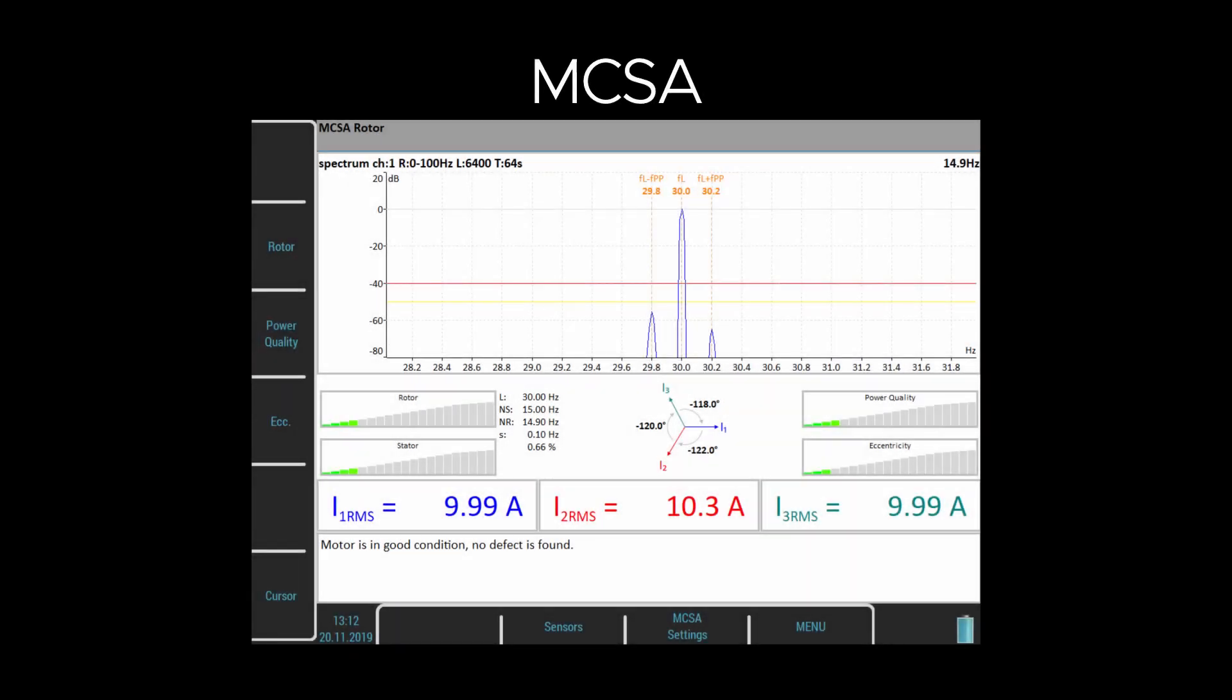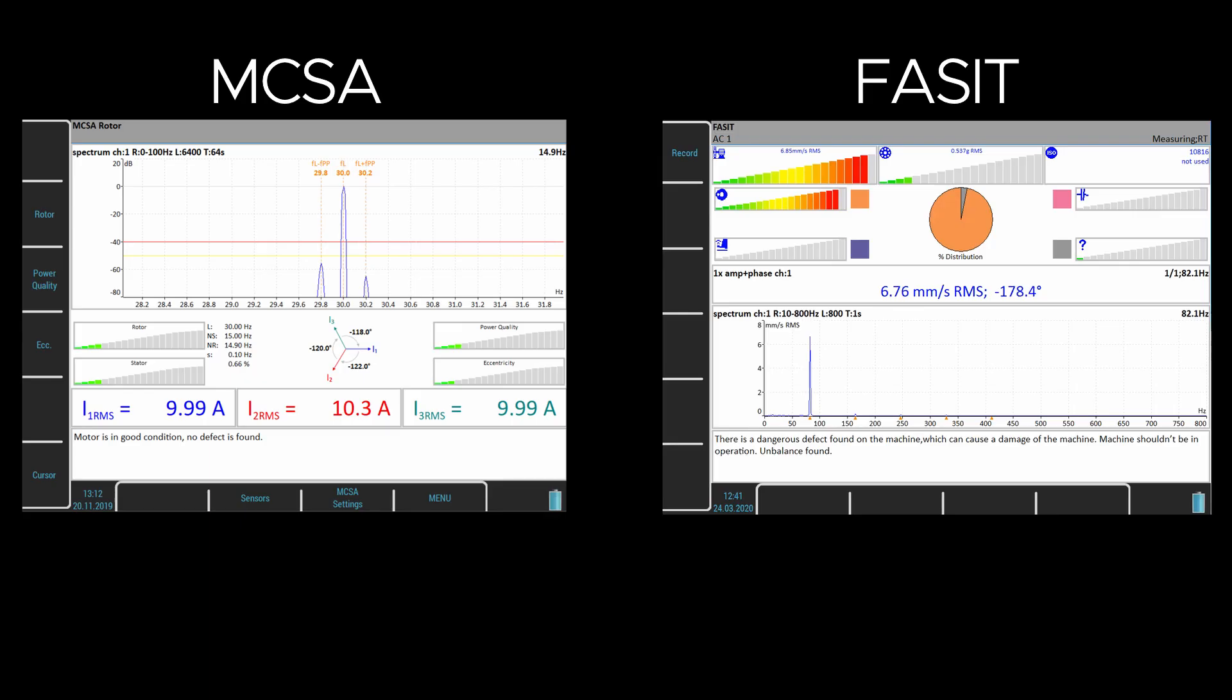Or you can use the automatic detection function. It is a similar feature to the ADASH automatic fault source identification tool FACET for vibration analysis. The device can automatically recognize the main causes of failures such as unbalance, looseness, misalignment and bearing faults.